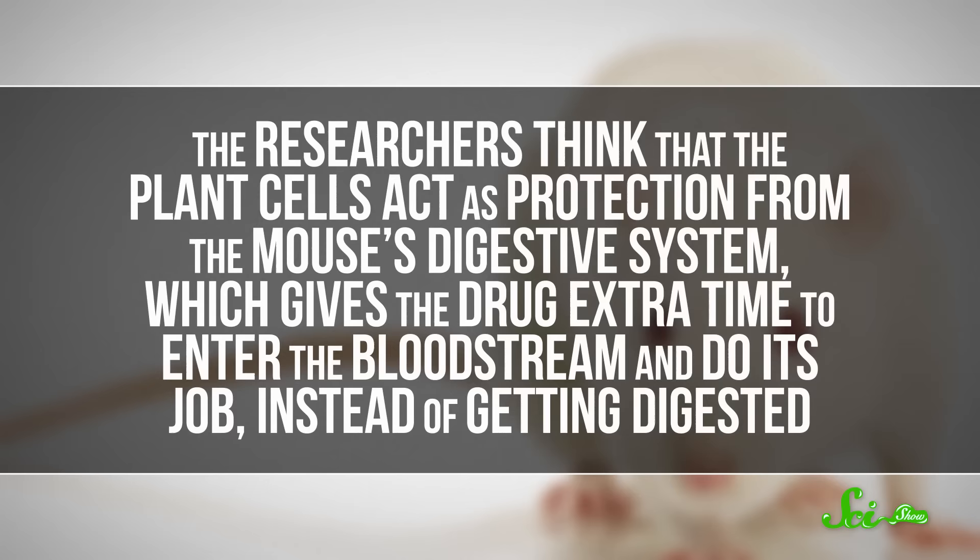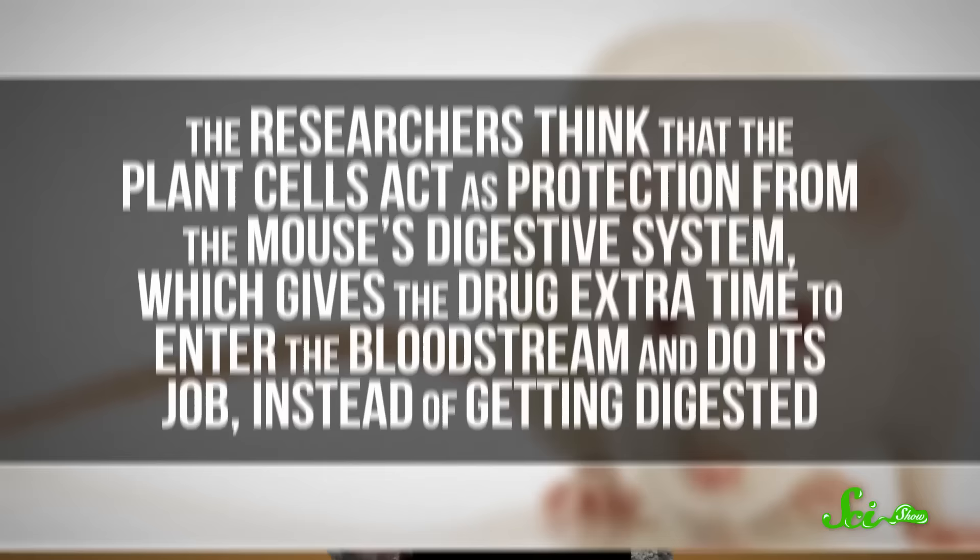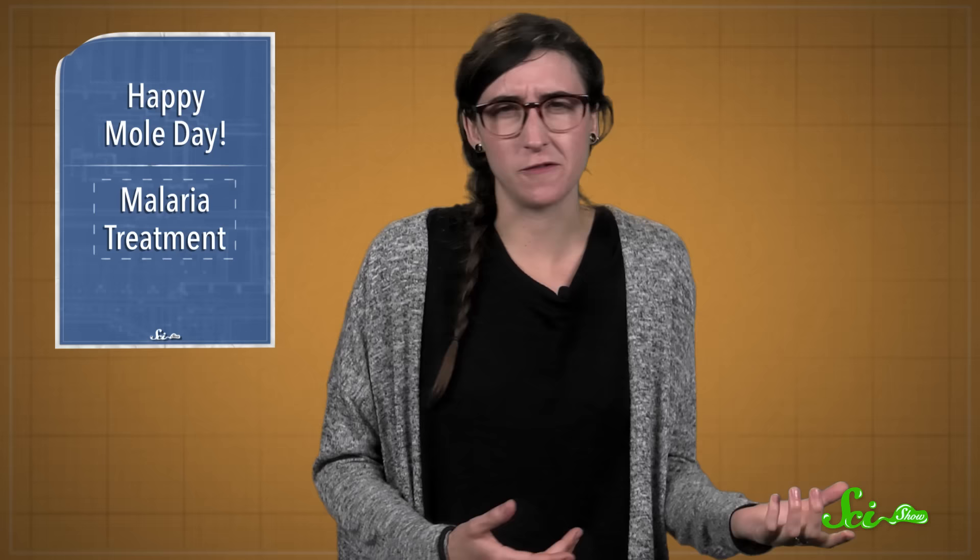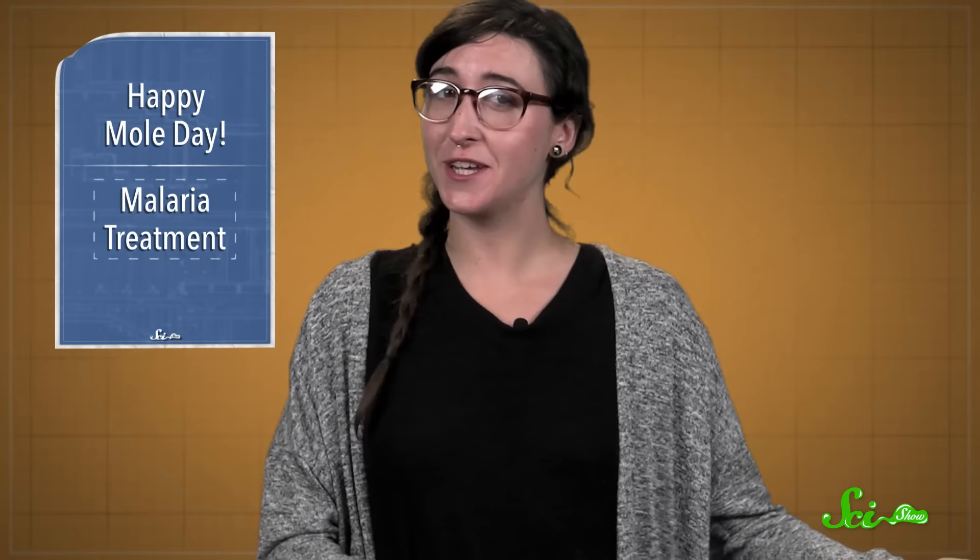The researchers think that the plant cells act as protection from the digestive system, which gives the drug extra time to enter the bloodstream and do its job instead of getting digested. Now, you might be thinking it probably isn't great to start feeding sick people a bunch of tobacco leaves — it seems like trading one serious health risk for another. That's why researchers are trying to duplicate this in more traditionally edible plants, like lettuce. Someday, we could have an artemisinin-filled salad that cures malaria.